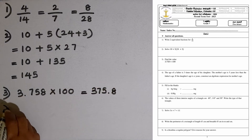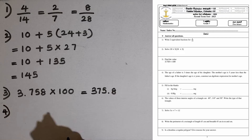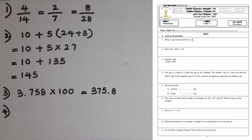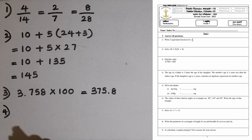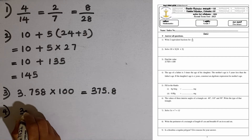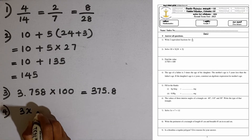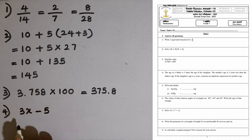Question number 4. The age of a father is 3 times the age of his daughter. The mother's age is 5 years less than the father's age. If the daughter's age is X years, construct an algebraic expression for the mother's age. If the daughter's age is X, the father's age is 3X. So mother's age is 5 years less than the father's age, meaning we subtract 5. The algebraic expression is 3X minus 5.